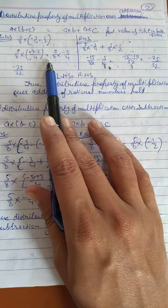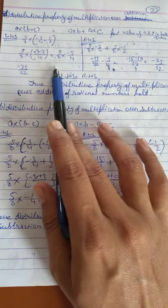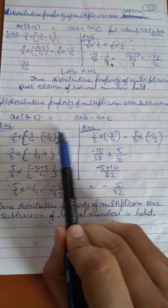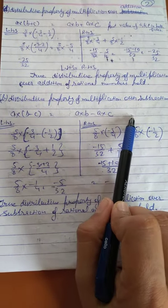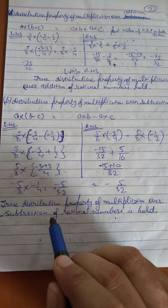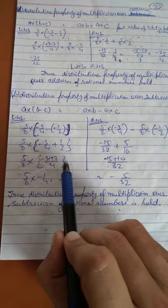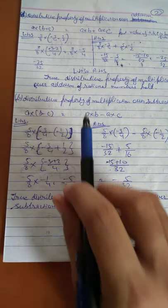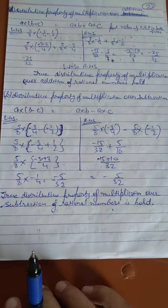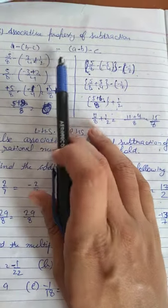When we solve the right-hand side and left-hand side separately we get the same result. The distributive property of multiplication over subtraction also holds, so part b and part d are both true.